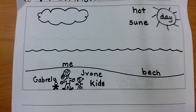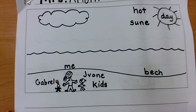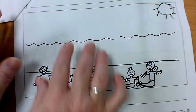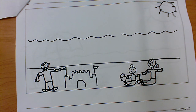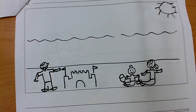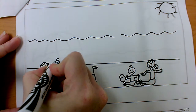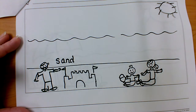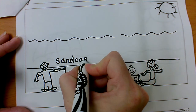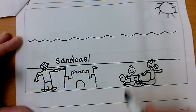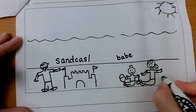Did I tell you the time, the place, and the characters? I did — it's a good beginning! The middle of the story usually says something that is happening. What did we do at the beach? Giovanni built a sand castle, and the baby and I played in the sand. I need a label for 'sand castle' — s-a-n-d, and the sight word 'and' hides in there — s-a-n-d c-a-s-t-l-e. And 'baby' — b-a-b-y. And I played in the s-a-n-d.